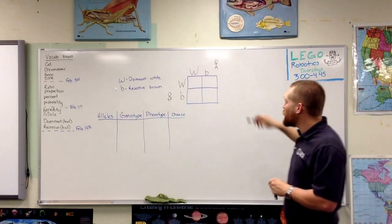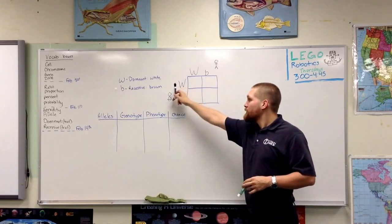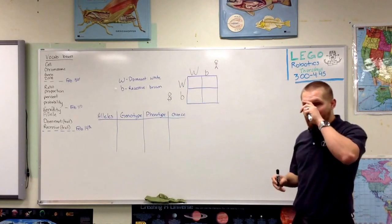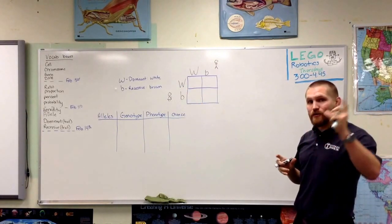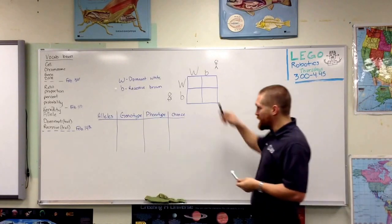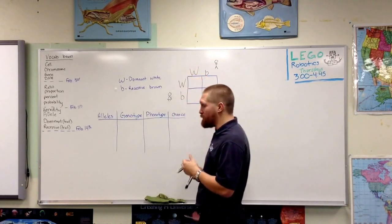On the Punnett square, the top represents one parent, the side represents another parent, and it represents their genes for a specific trait. Right now we're talking about the color of fur in rabbits.